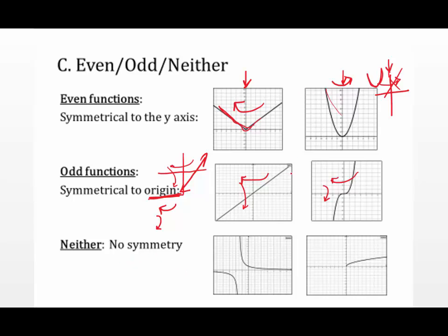No symmetry means it doesn't meet either criterion — you say neither. For example, folding this graph along the y-axis doesn't match, and folding along both y and x still doesn't match, so there's no symmetry. Same with the square root function — there's nothing to match when you fold. As you do these problems, put the equation in your graphing calculator, graph it, and run the two tests: the y-axis test for even, and the origin test for odd. That's how you identify whether a function is even, odd, or neither.